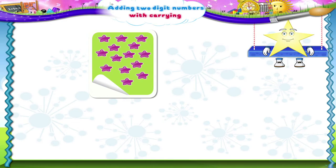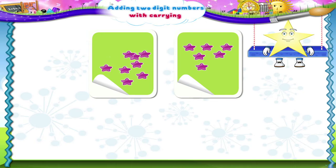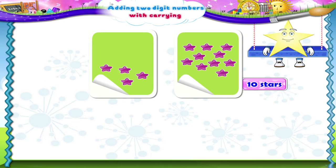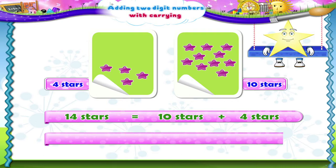Let's make a group of ten stars and the remaining stars we shall use for decoration. How many groups of ten stars will be formed, Starry? One group of ten stars is formed and four stars are left. We can also write this as fourteen stars equals ten stars plus four stars, or fourteen units is equal to one ten and four units.